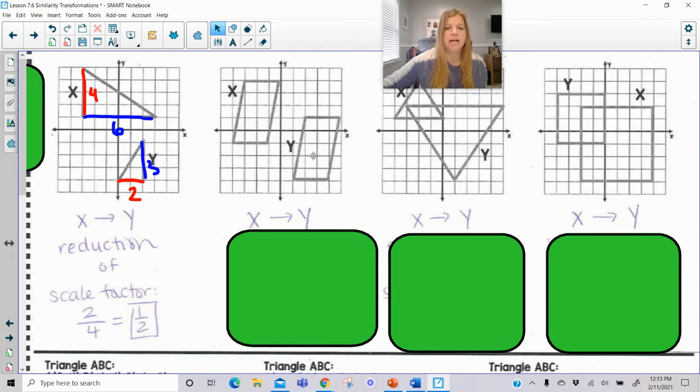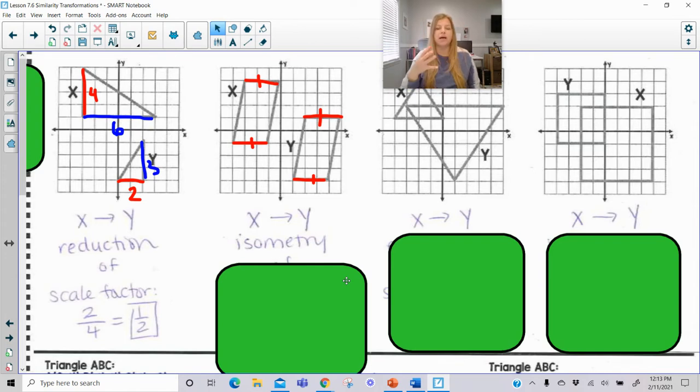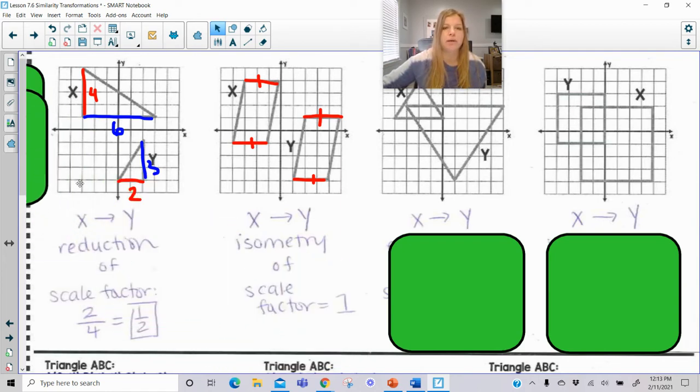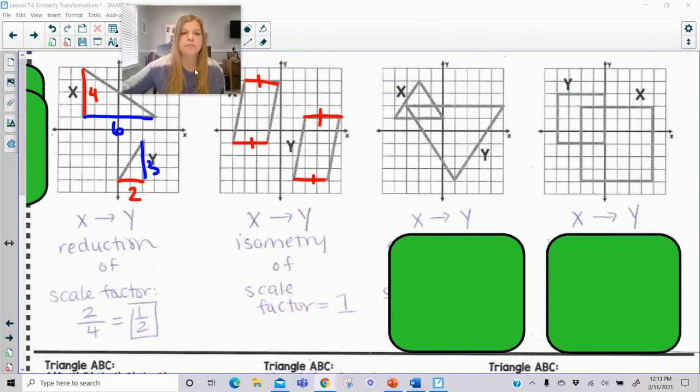X to Y, we can see here, it actually stays the same. And the way I know it's the same is that this is a length of 3 and this is a length of 3. They're identical. Same thing here, a length of 3, a length of 3. So when you don't have any scale factor change, that means it's an isometry. Isometry means that the size of the figure did not change. It's just a one-to-one relationship. We call it a scale factor of 1 because I'm just literally multiplying by 1 to get the same thing, like an identity.